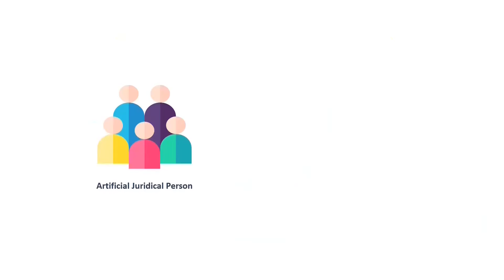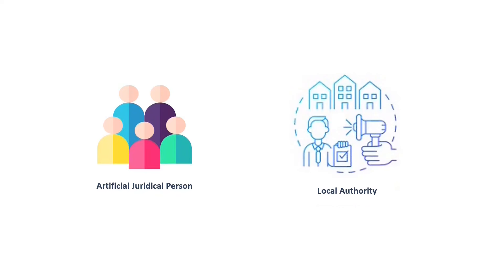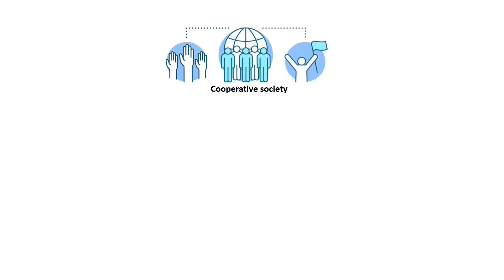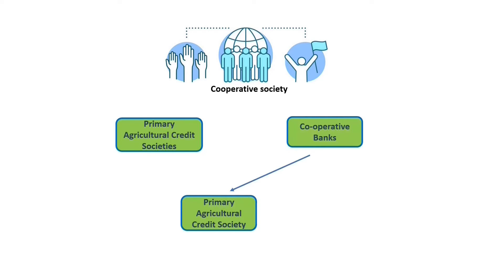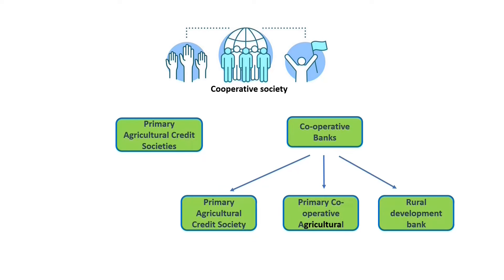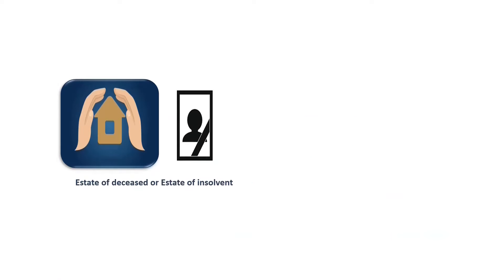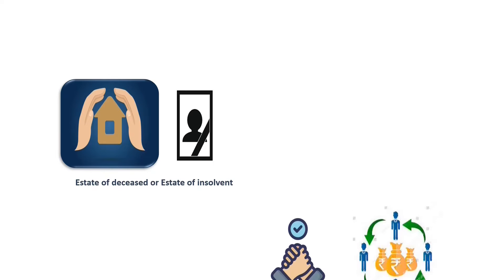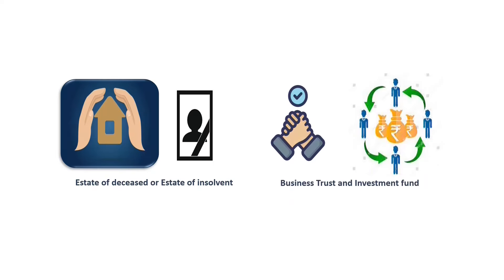The form can also be used by artificial judicial persons referred to in section 2 subsection 31 clause 7, local authority, cooperative societies including primary agricultural credit societies, cooperative banks, and cooperative banks other than primary agricultural credit society or a primary cooperative agricultural and rural bank. Form ITR-5 can also be used for filing income tax return for an estate of deceased, estate of insolvent, business trusts, or investment funds.